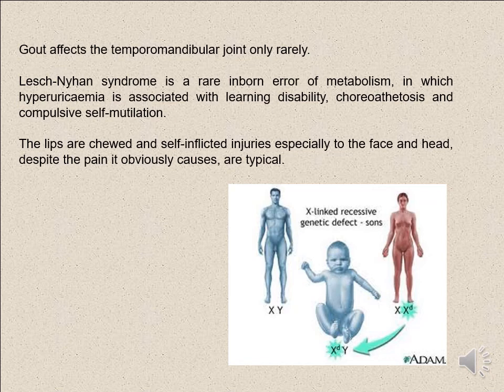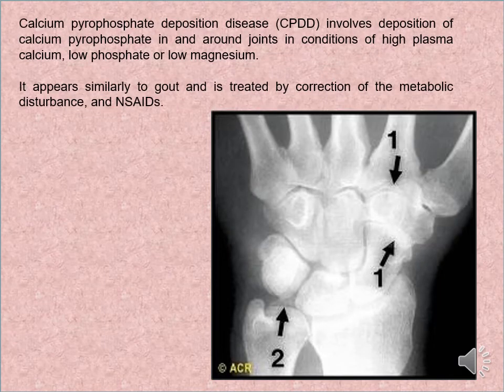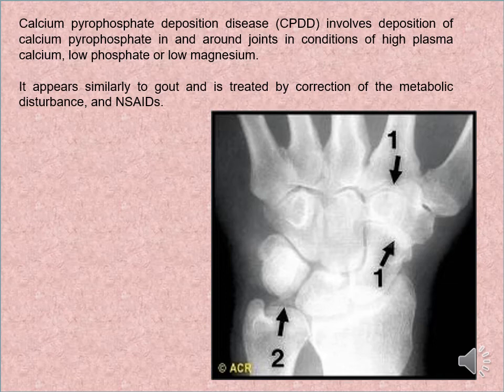Gout affects the temporomandibular joint only in rare cases. Lesch-Nyhan syndrome is a rare inborn error of metabolism in which hyperuricaemia is associated with choreoathetosis, intellectual disability, and compulsive self-mutilation. Patients chew and self-inflict injuries, especially to the lips and tongue. Calcium pyrophosphate deposition disease involves deposition of calcium pyrophosphate crystals around joints in conditions of high plasma phosphate, low pyrophosphatase, or low magnesium. It appears similarly to gout and is treated by correction of the metabolic disturbance and NSAIDs.